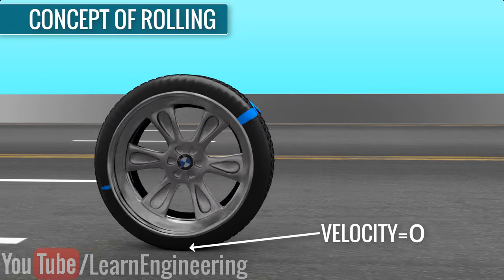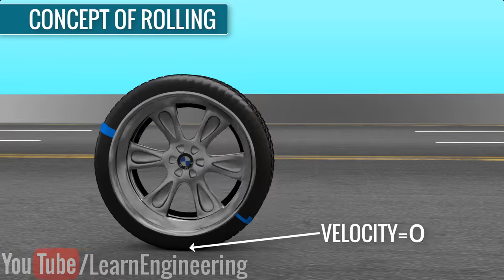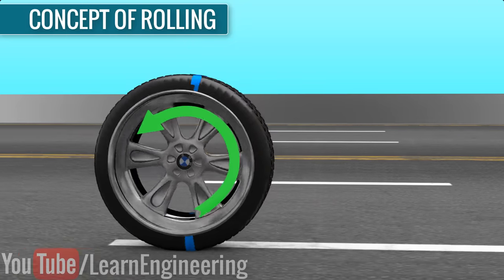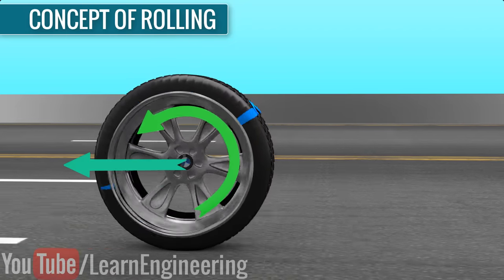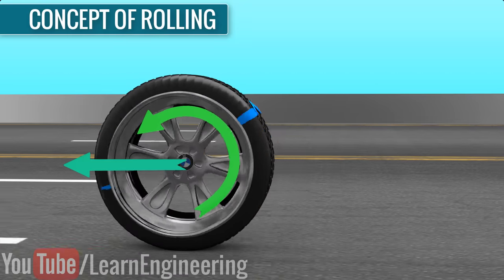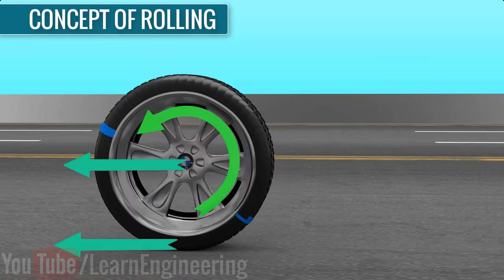The wheels have two kinds of motion: they rotate on their axis and also they move along the direction of the car. Due to these two kinds of motion, they have two kinds of velocity, translational and rotational.